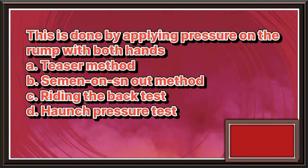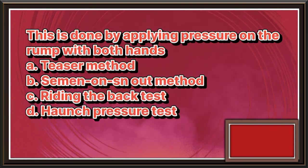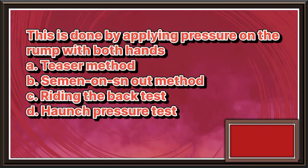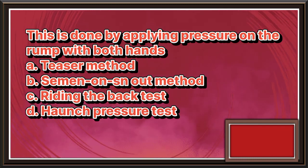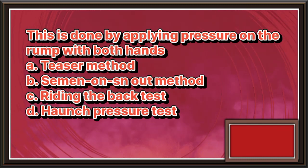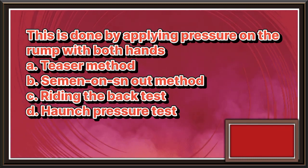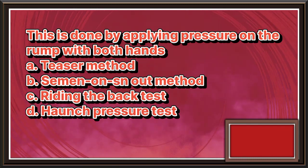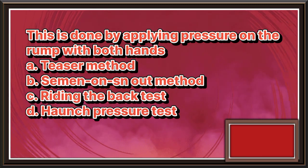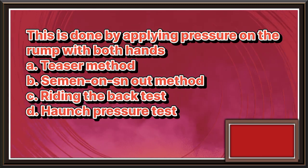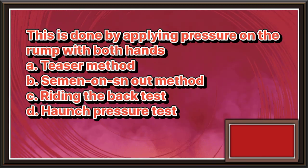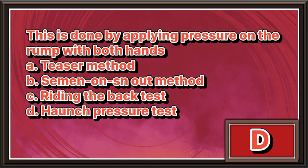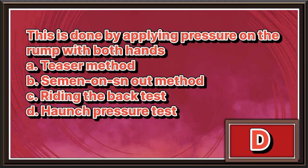This is done by applying pressure on the rump with both hands. A. Teaser method. B. Semen on snout method. C. Riding the back test. D. Haunch pressure test. The answer is letter D.